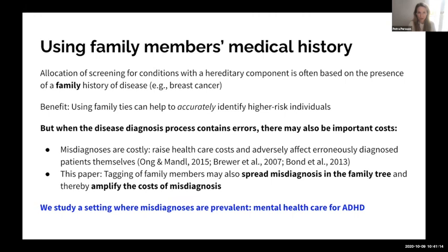We already know from an important literature that misdiagnoses are costly — they raise healthcare costs and adversely affect the people who are erroneously diagnosed. What we add in this paper is that tagging of family members may also spread misdiagnosis in the family tree, thereby amplifying the costs. We study this in a setting where misdiagnoses are prevalent: mental health care for ADHD.